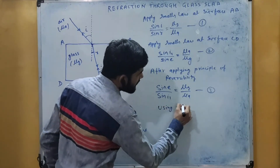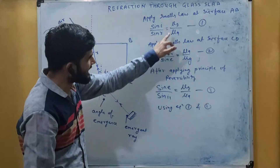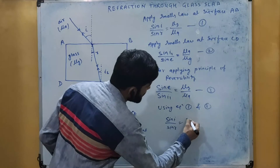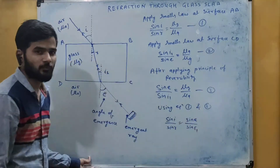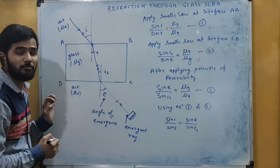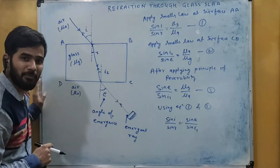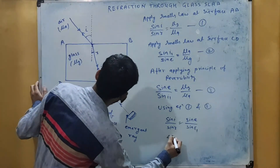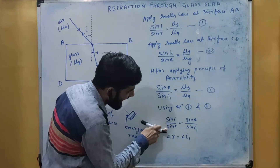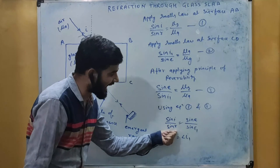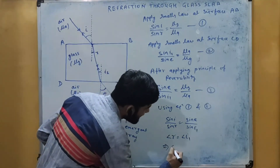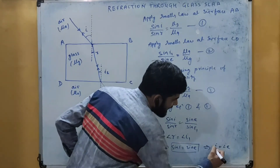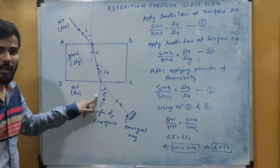Using equations 1 and 3, since both sides are equal we can equate them and write: sine i by sine r equals sine e by sine i1. Now see in this diagram — these two normal lines are parallel to each other. Since both normals are parallel, angle r is equal to angle i1. So sine r and sine i1 are equal and they cancel each other, giving us: sine i equals sine e. Therefore we can conclude that angle i equals angle e.